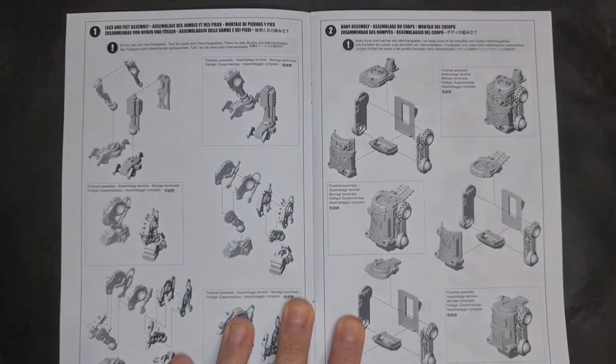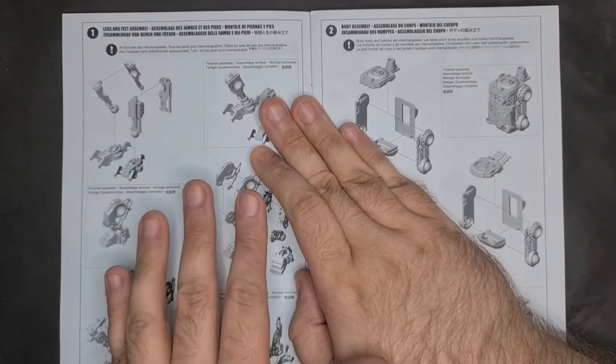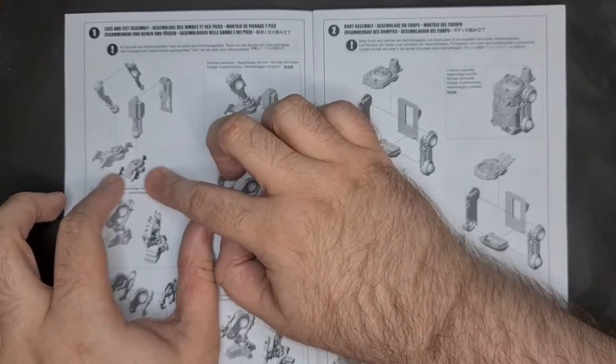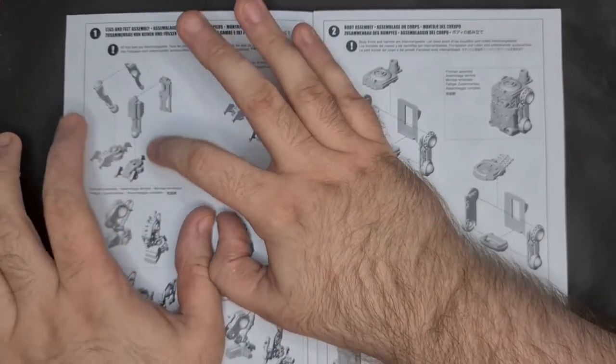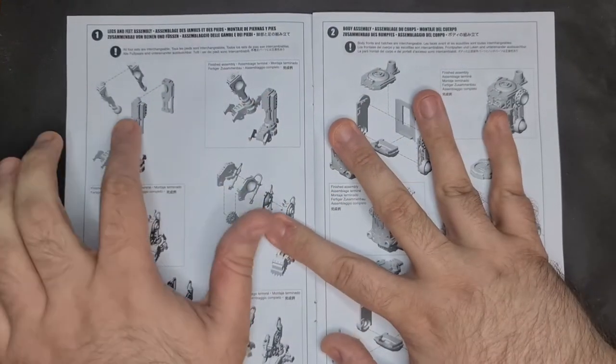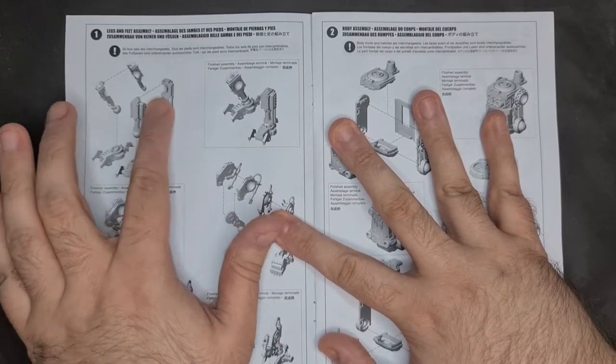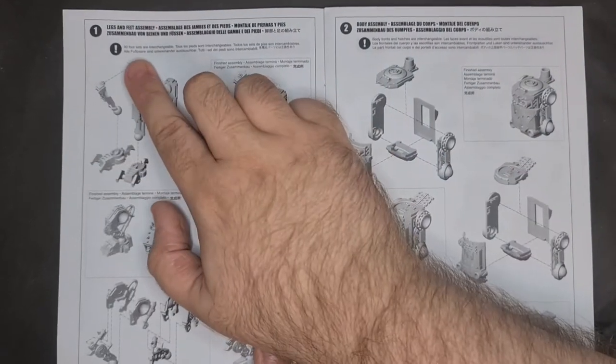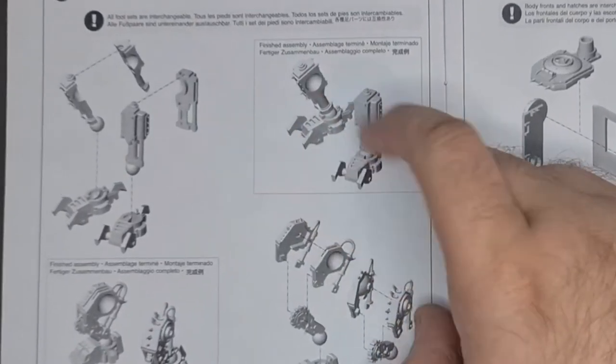So now step one is the legs and feet assembly. These build guides aren't quite as good as the new ones, but basically the more solid part is what's been glued together, and then you got a more transparent part that's showing the bits that need to be glued together. So you put these two pieces together, it's basically the leg I guess you could call it, and then you got the foot.